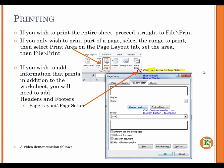Printing. If you wish to print the entire sheet, proceed straight to file, print. If you only wish to print part of a page, select the range to print. Then select print area on the page layout tab. Set the area. Then file, print. If you wish to add information that prints in addition to the worksheet, you will need to add headers and footers.